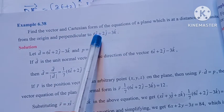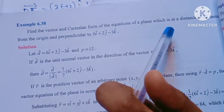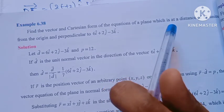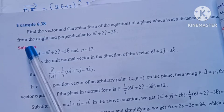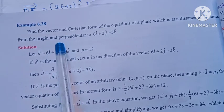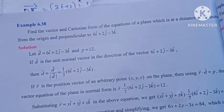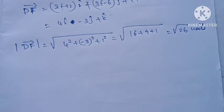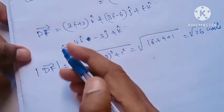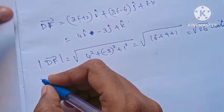Find the vector and Cartesian form of the equation of a plane which is at a distance 12 from the origin and perpendicular to 6i+2j-3k. We will show the vector and Cartesian form of the equation.